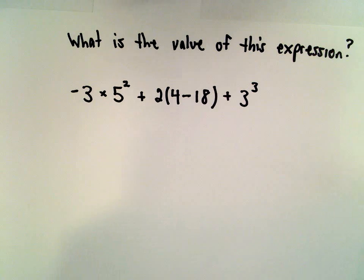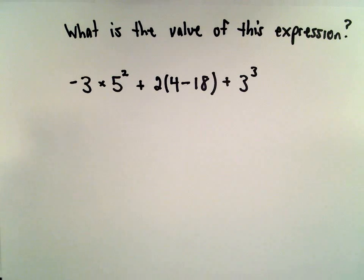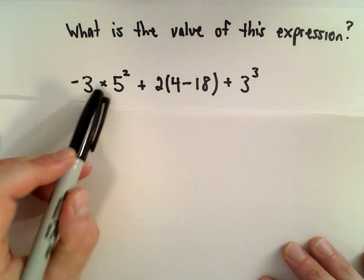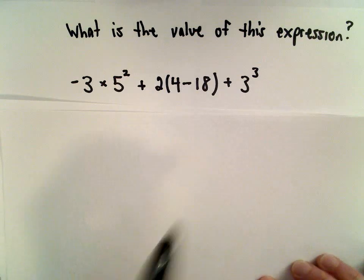This is problem number five from the sample GED test, and this is the last one where we're not allowed to use a calculator. We want to find the value of the expression: negative 3 multiplied by 5 squared plus 2 multiplied by the quantity 4 minus 18, plus 3 cubed.